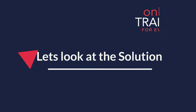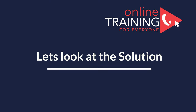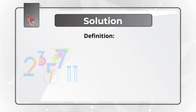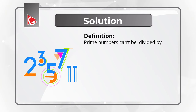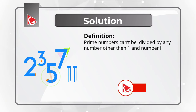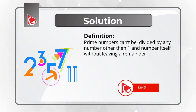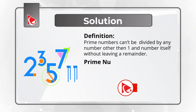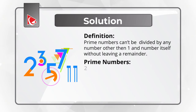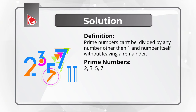Did you solve it? Let's move forward and get to the correct solution together. To solve this challenge, let's start with the definition of a prime number. Prime numbers cannot be divided by any number other than 1 and the number itself without leaving a remainder. Some examples of prime numbers would be 2, 3, 5, 7, 11, and you can continue the chain.